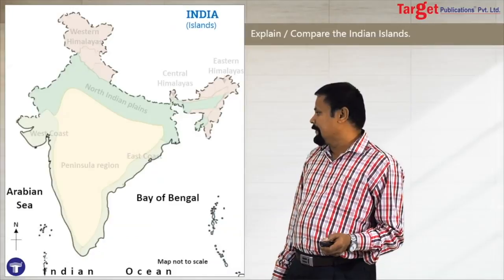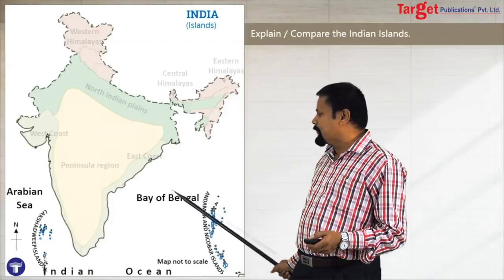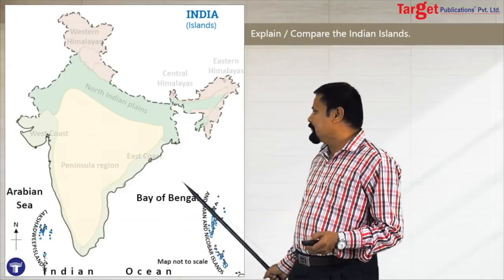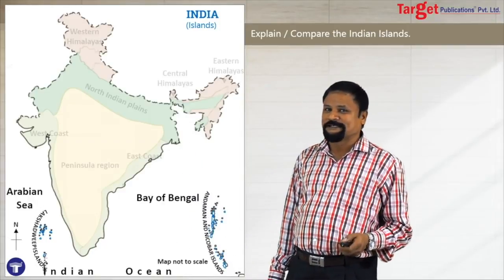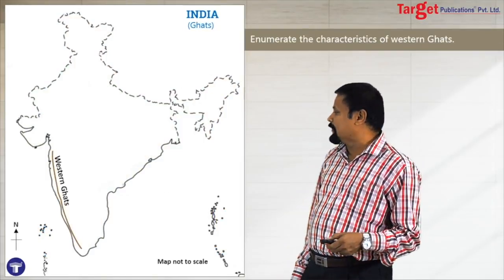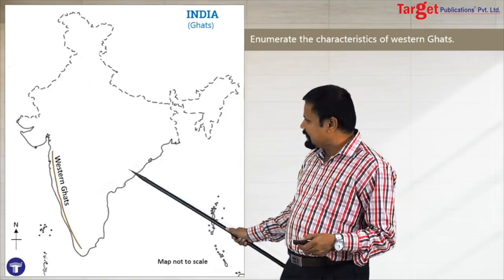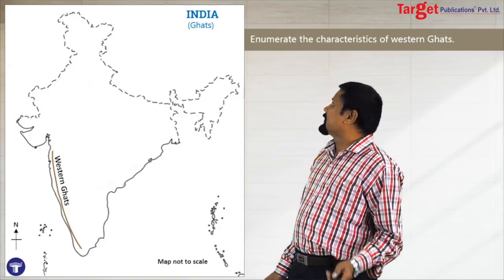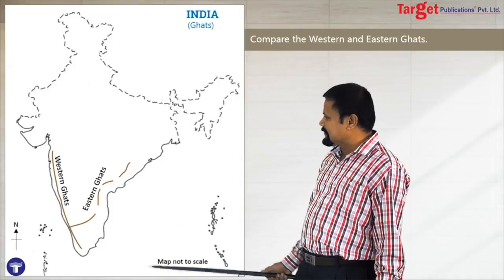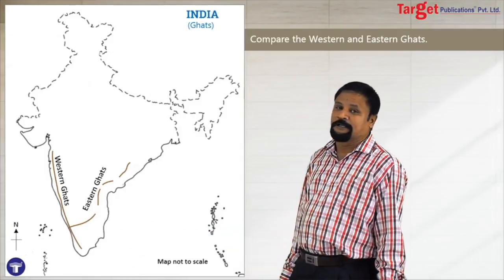For the islands, you write Arabian Sea, Indian Ocean, and Bay of Bengal, and you yourself have to draw the Lakshadweep islands and Bay of Bengal islands. For questions about the Western Ghats, draw the stencil and show only the Western Ghats. If the question is to compare the Western Ghats and the Eastern Ghats, draw the Western Ghats here and the Eastern Ghats also.